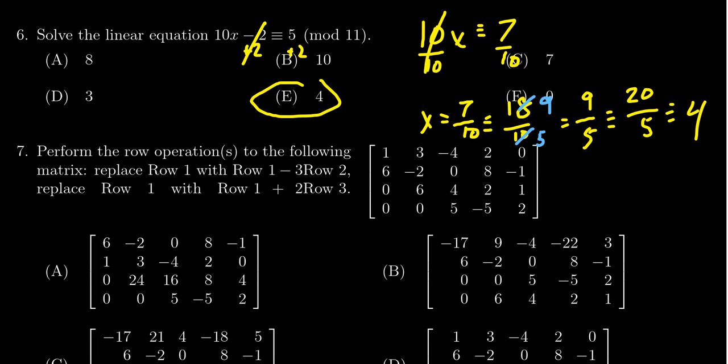If you subtract 33 from 38, that gives you 5. 33 being a multiple of 11, those things are congruent. So 4 is the correct choice for this question.